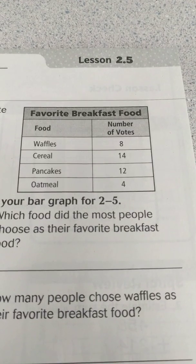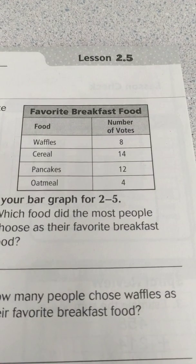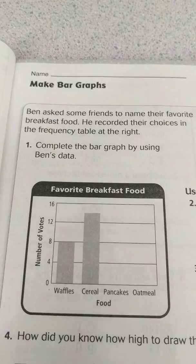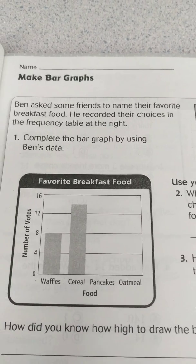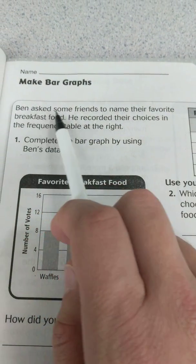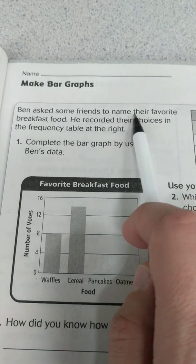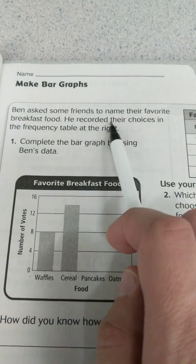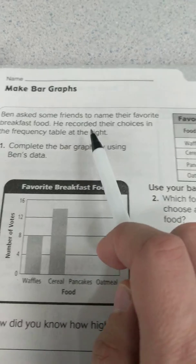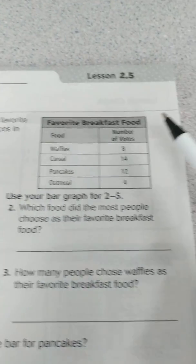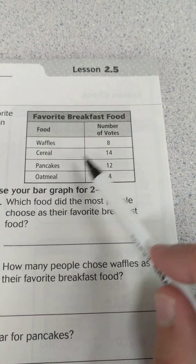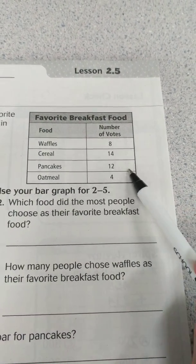This is Go Math lesson 2.5 for third grade and today we're going to make bar graphs. The very top says Ben asked some friends to name their favorite breakfast food. He recorded their choices in the frequency table at the right, which we see over here — different types of breakfast foods and the numbers of votes.